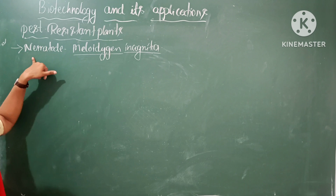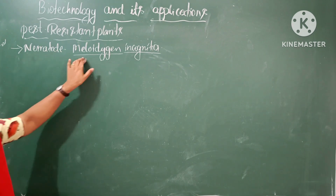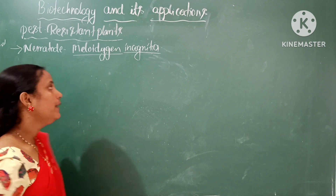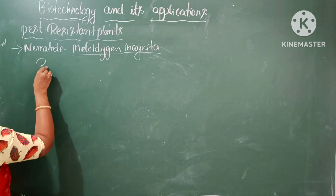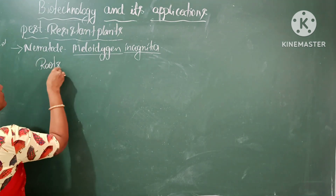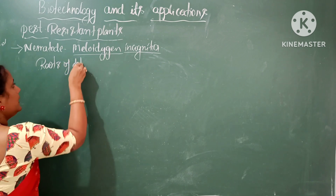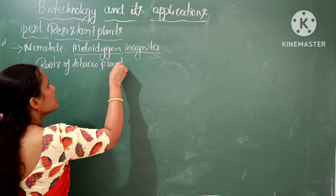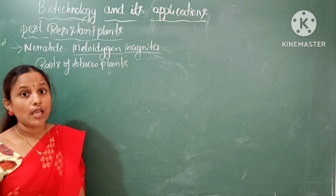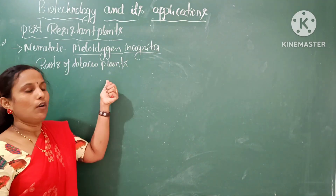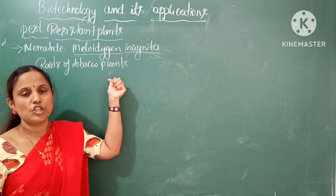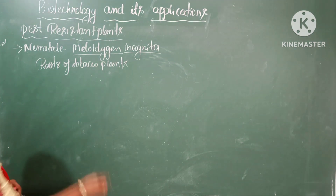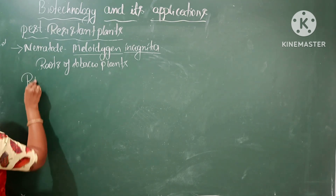A nematode pest known as Meloidogyne incognita is known to infect the roots of tobacco plants and causes crop loss. This crop loss was efficiently prevented by a novel technology called RNA interference.